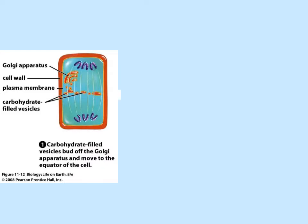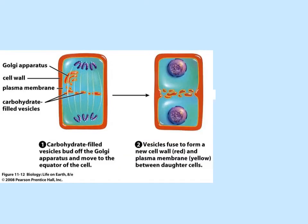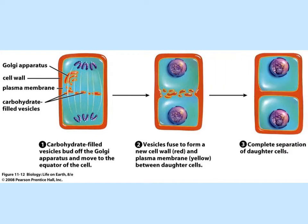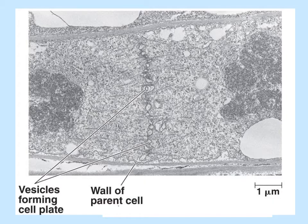In plant cells, cytokinesis is different due to the cell walls that encircle the plasma membrane. Instead of pinching, the plant cell must form a new cell wall between the newly formed nuclei. Vesicles filled with carbohydrates unite along the midplane, eventually forming a solid wall to separate the two new daughter cells. This micrograph shows the vesicles that will form the new cell wall.